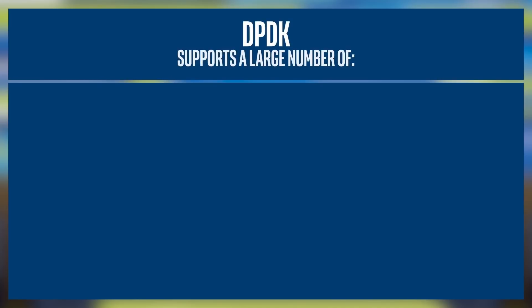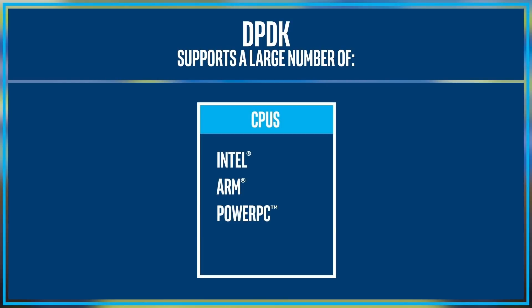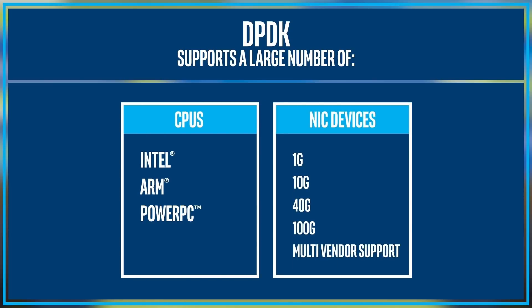DPDK supports a large number of CPUs and NIC devices. The CPUs include Intel, ARM, and PowerPC. NIC support includes 1 gig, 10 gig, 40 gig, and 100 gig NICs, with multi-vendor support.